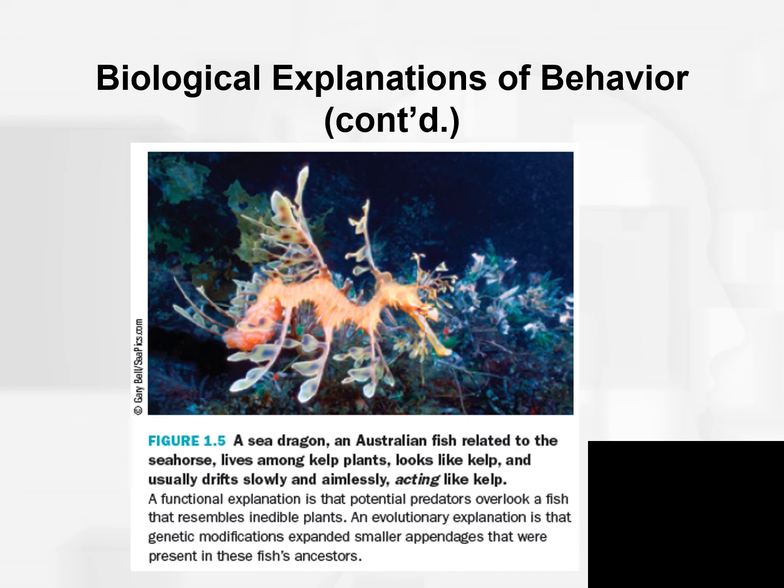The evolutionary explanation for the sea dragon is that genetic modifications expanded smaller appendages that were present in these fishes' ancestors — just a description of historically and evolutionarily what happened.